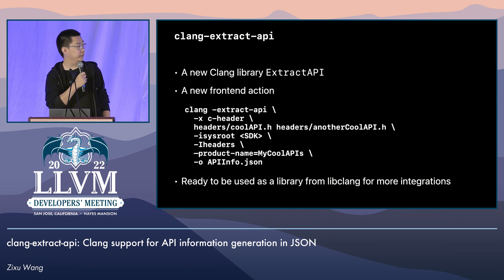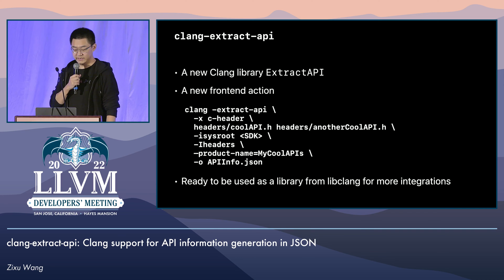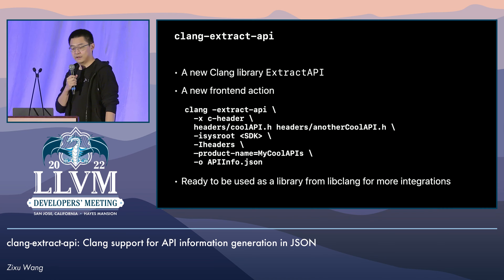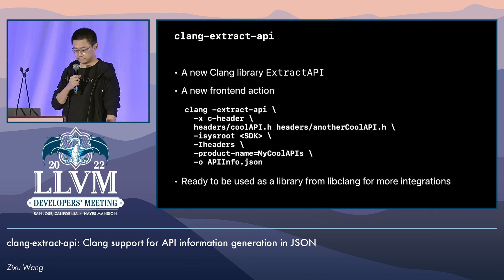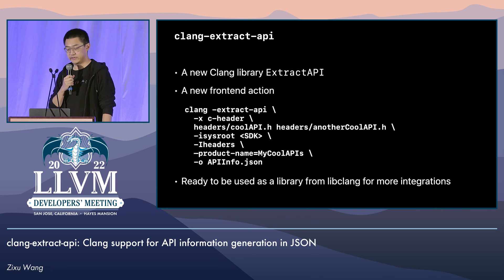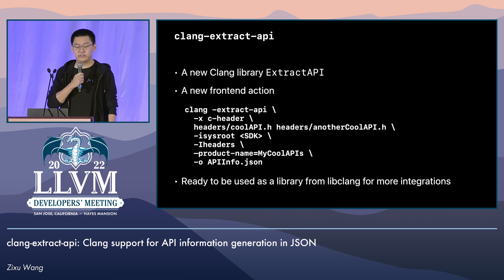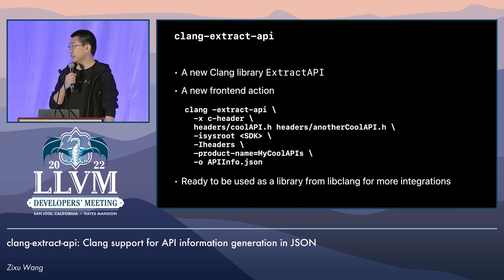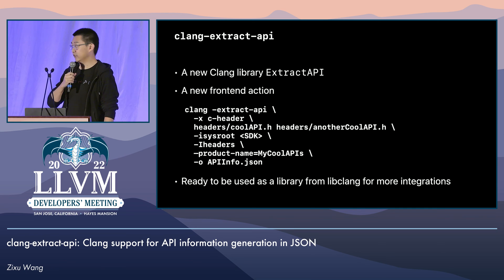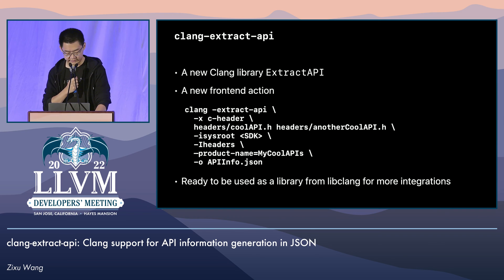And therefore, we've proposed and developed clang-extract-API, which is mainly a new library inside Clang called extract-API, with a new front-end action to invoke it to extract API information from input headers into a JSON output. The functionality is implemented inside Clang itself, meaning it's also possible to use it from libclang for a wider range of integration opportunities.